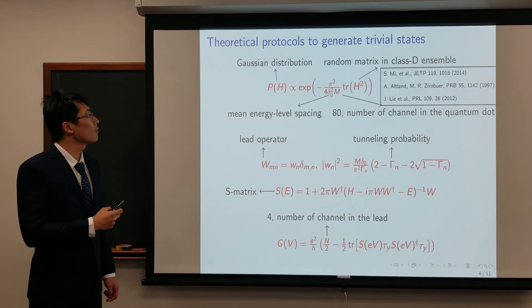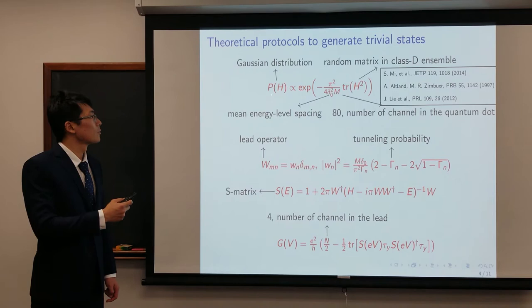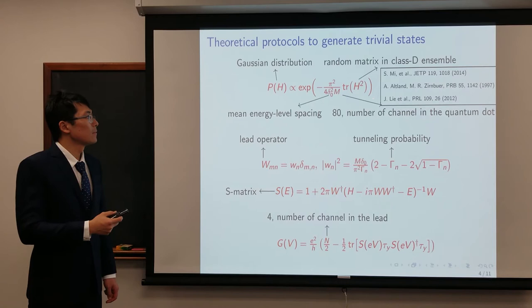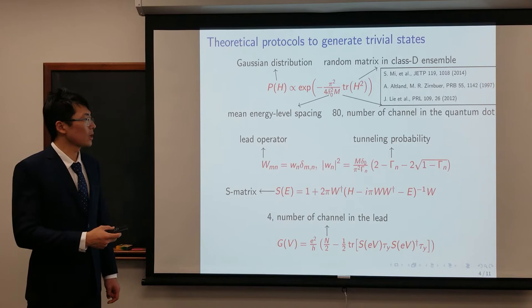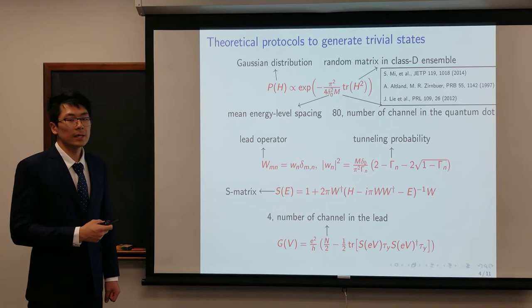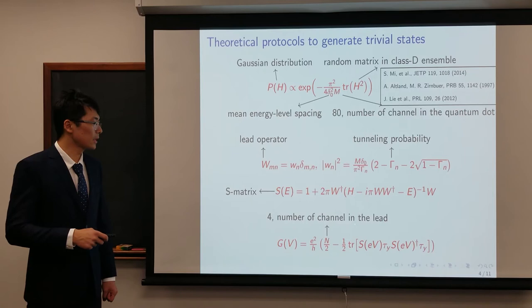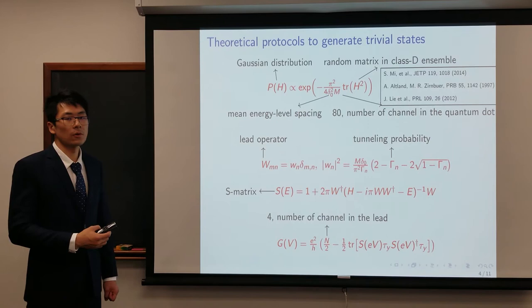To go over the theoretical protocol, we first generate a random matrix H which obeys the Gaussian distribution. The dimension of H is m, which is the number of channels in the quantum dot. Because m equals 80, an even number, we guarantee for all the following results they are topologically trivial. Then we define a data operator W which couples the lead and the quantum dot. W is an m by n matrix, where n is the number of channels in the lead. We simply set n equals 4, so that the conductance will change from 0 to 4e²/h.